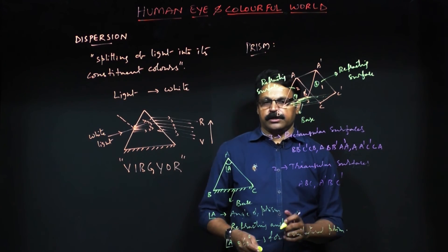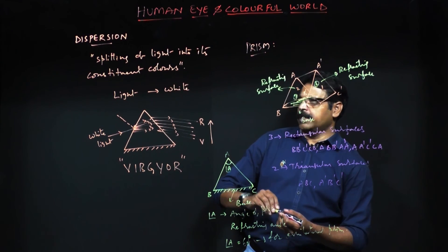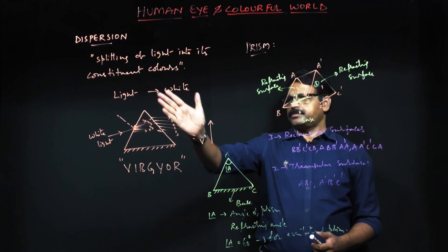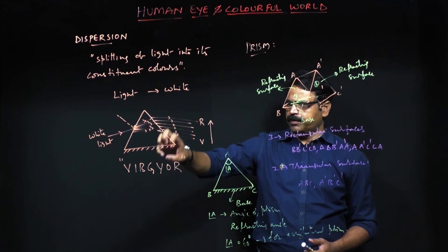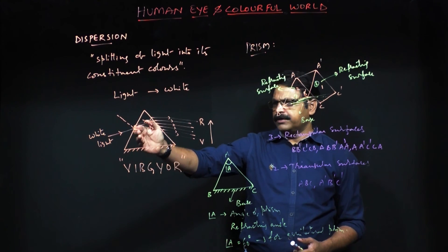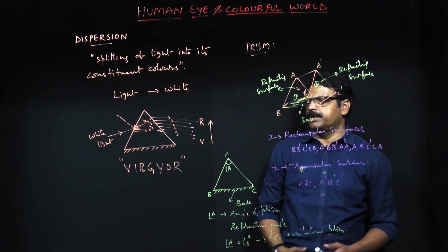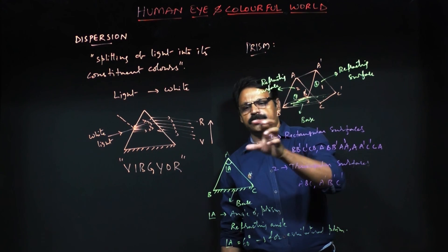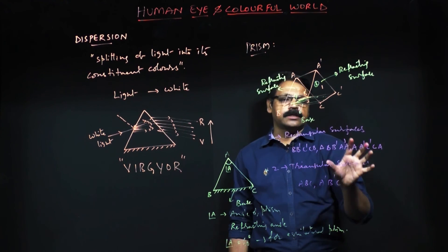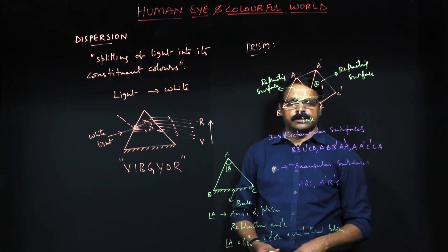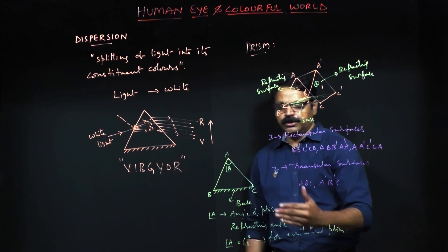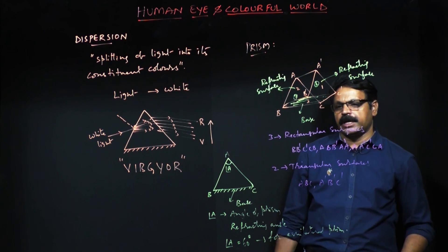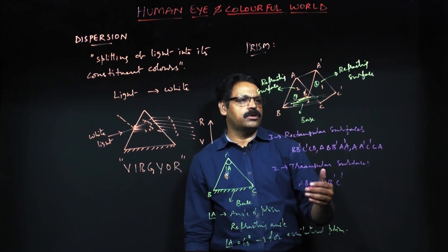To summarize this lecture: dispersion is the phenomenon of splitting up of white light into constituent colors, observed using a prism — white light falls on one refracting surface and dispersed light exits from the other. The prism has a three-dimensional structure with three rectangular and two triangular surfaces. Its cross-sectional view is triangular, and key terms include the base, angle of prism, and refracting surfaces. Using the prism, the refractive index of its material can also be calculated.